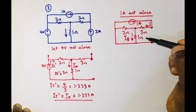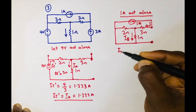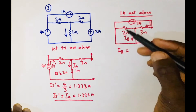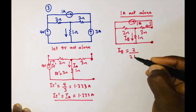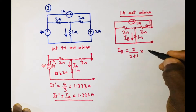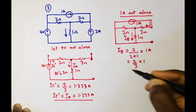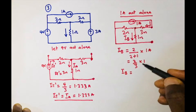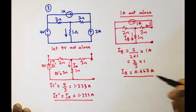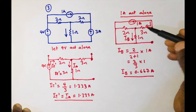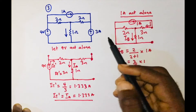We are interested in IB, the current flowing through the one ohm resistor. Using the current division rule, IB equals two divided by the sum of the two resistors (two plus one), times the total current approaching the junction, which is one ampere. So IB equals two over three times one, which equals 0.667 amperes. That is the current flowing through the one ohm resistor when the one ampere current source is acting alone.